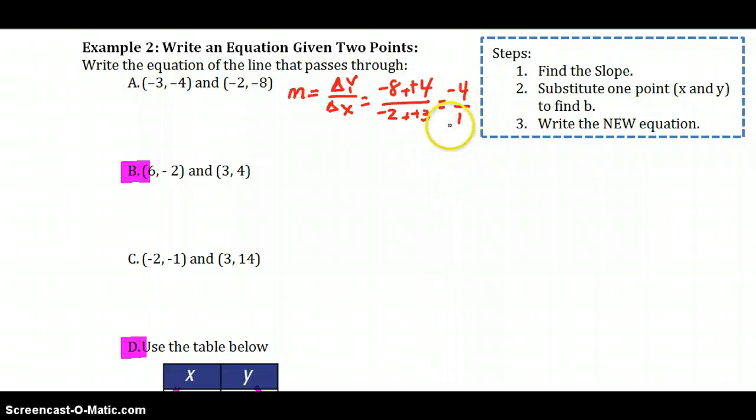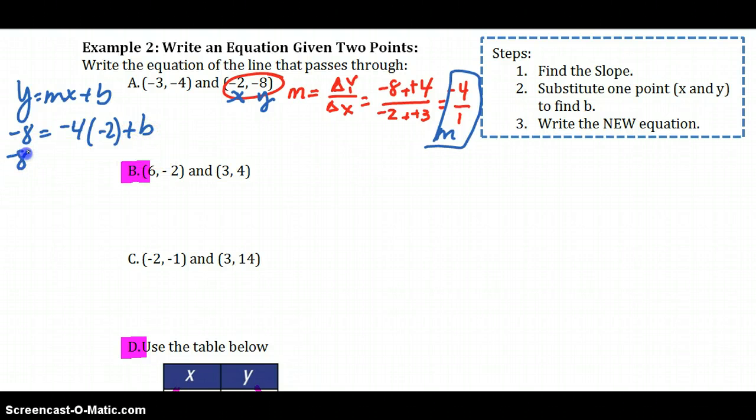Now I need to know my y-intercept. So I need to pick one of those points. It doesn't matter which point you pick. And you're going to plug this in for your x and for your y, temporarily, until we can find b. So in this equation, y equals mx plus b. My y is going to be negative 8. My m is negative 4. I'm going to use this negative 2 for x long enough to find b. So negative 8 equals negative times negative makes positive 8. Plus b, subtract 8 from both sides. And b is negative 16.